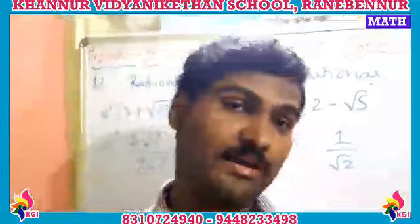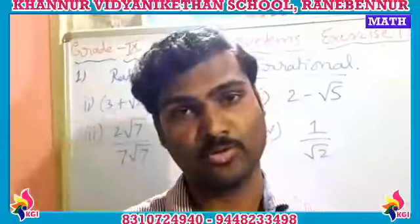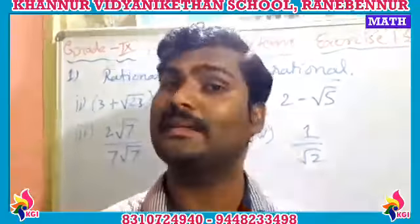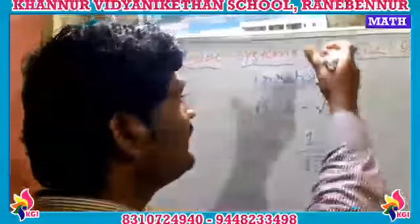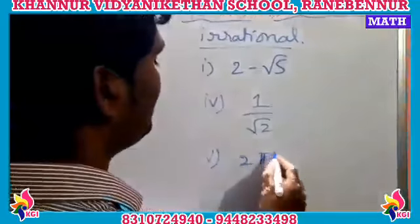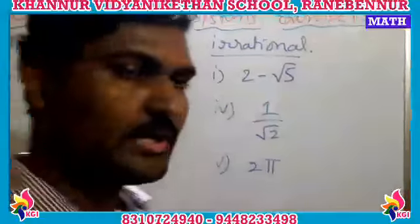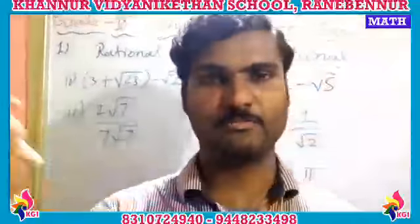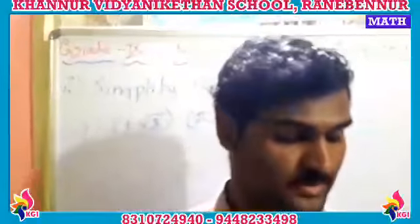The fifth one is 2π. The value of π is 3.142... and it keeps going — it does not end. Since it is a non-terminating decimal expansion, it comes under the irrational category. So 2π is an irrational number.